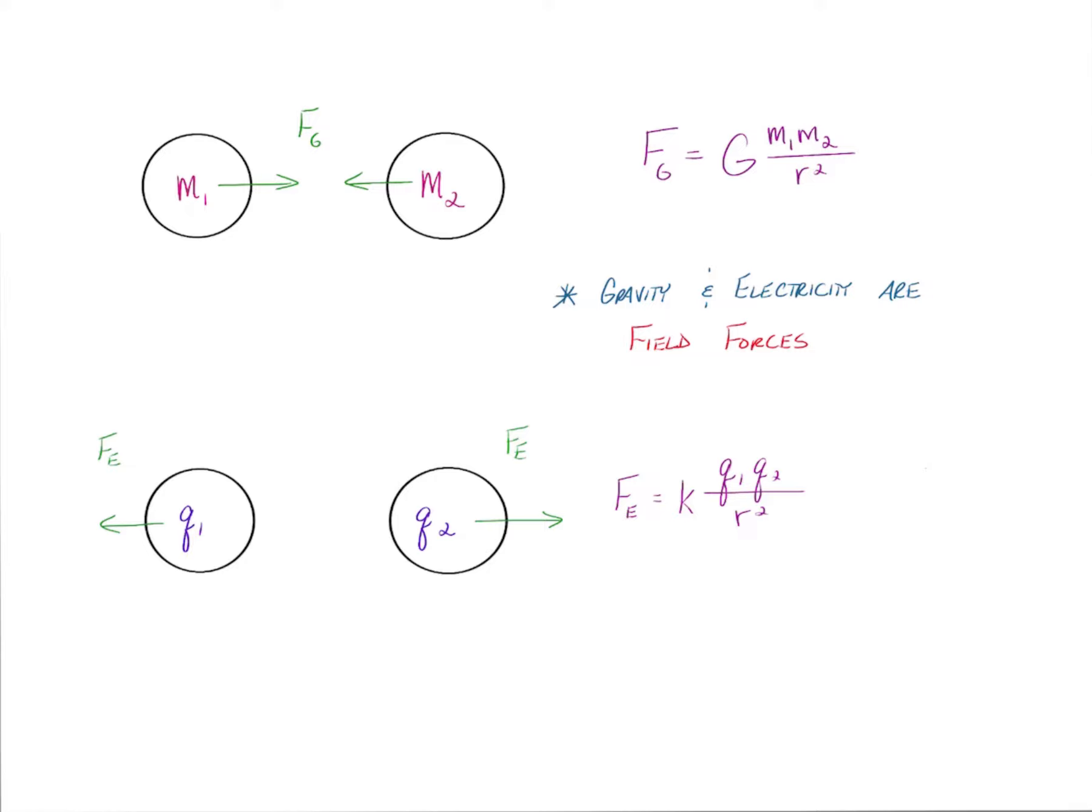But understand we replace the gravitational constant with Coulomb's constant, which relates to electrical charge, and we replace the masses with charges. R itself is still the distance between the center of these two charges. But take a second to notice that there's a striking similarity between those two equations, and that's because they're both field forces. And there are a lot of similarities with field forces.